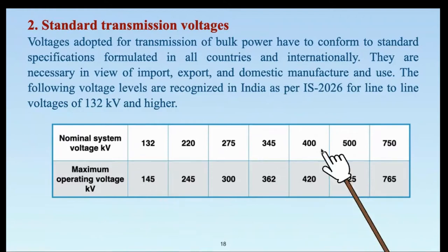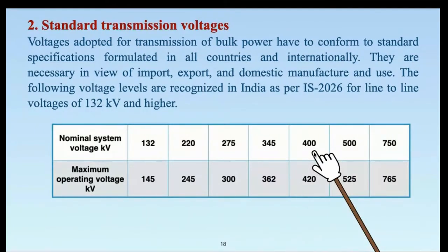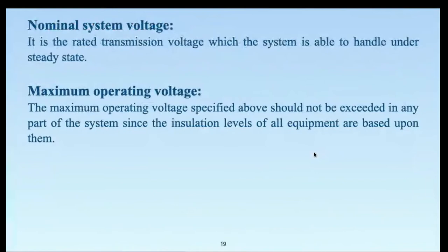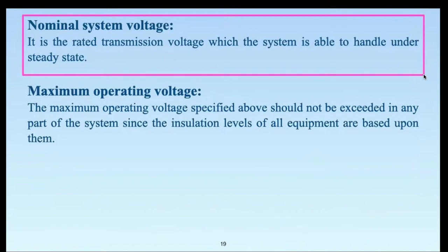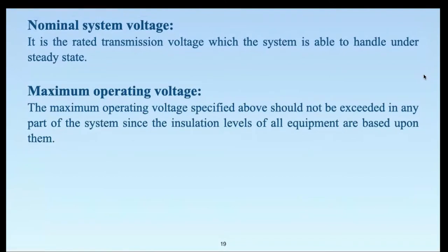Now we take a look at the definitions. Nominal system voltage is the rated transmission voltage which the system is able to handle under steady state — it is a rated voltage. The system will be able to carry this voltage indefinitely in service unless there is some failure or disturbance in the transmission network.